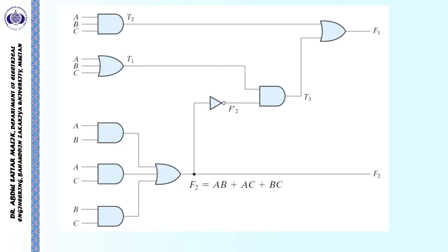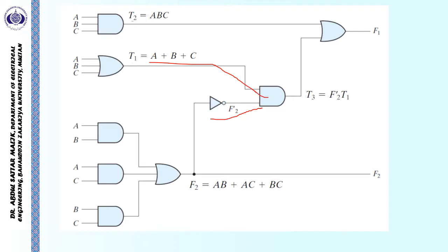Next, we will find the output of this OR gate. The output of this OR gate T1 will be equal to A plus B plus C. Similarly, the output of this AND gate T2 will be equal to ABC. T3 will be equal to F2 dash, which is coming from over here, and T1. And lastly, F1 is equal to T3 plus T2.